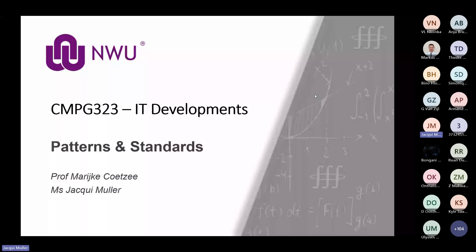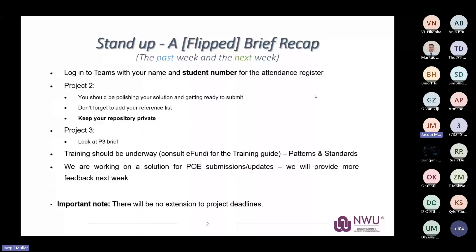You should be logged into Teams with your student accounts for the attendance register. You should be busy with project two, nearly finished, or possibly already submitted. Don't forget your reference list. Make sure your repository is private on GitHub and that you've at least started looking at project three's brief. Please don't stress too much about project three — just focus on getting project two polished and submitted. Also keep updating your portfolio of evidence weekly and make sure the training you're doing is valuable.